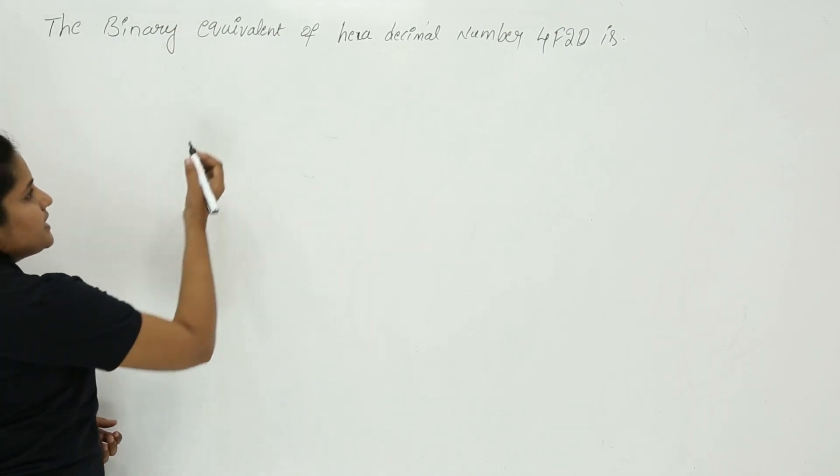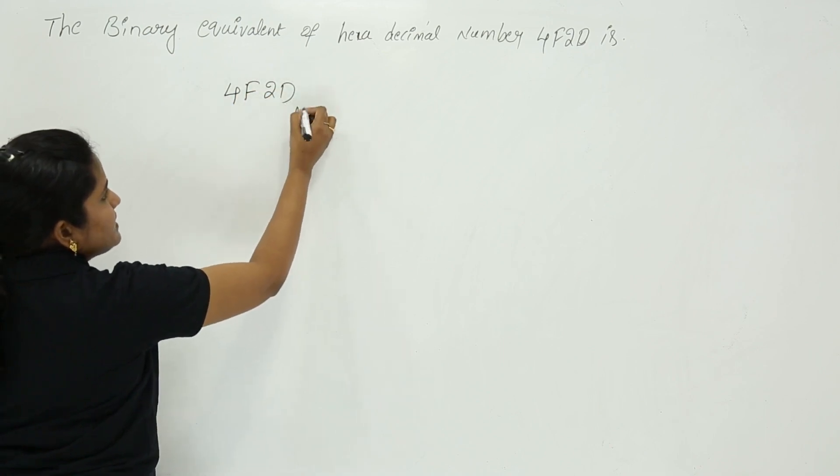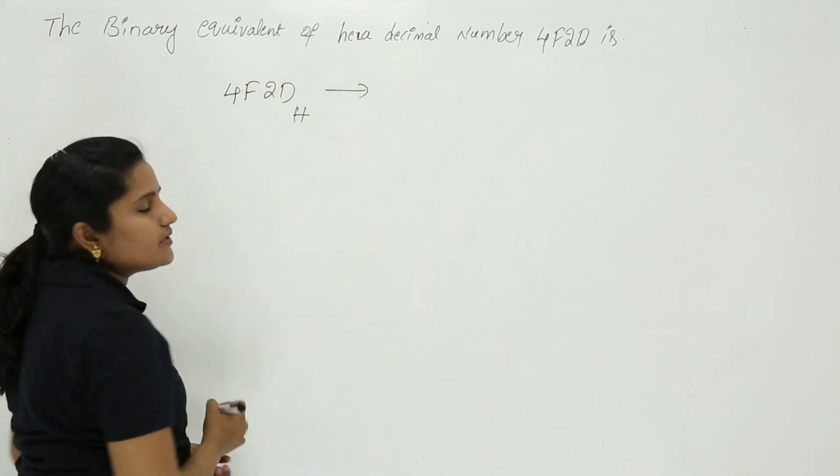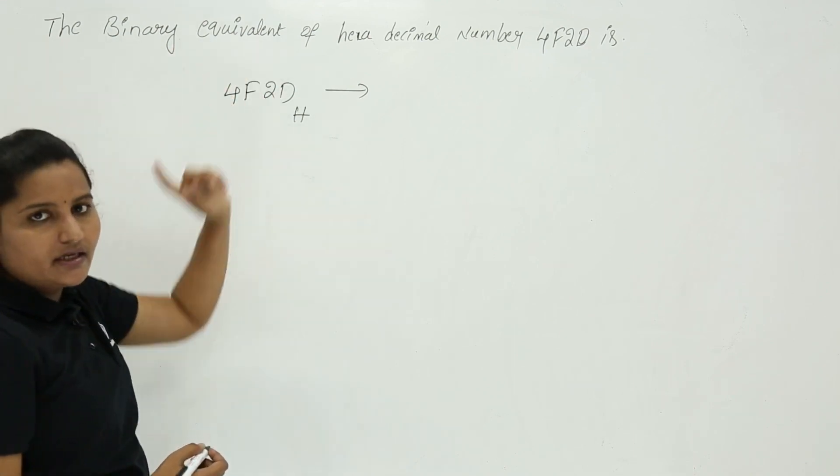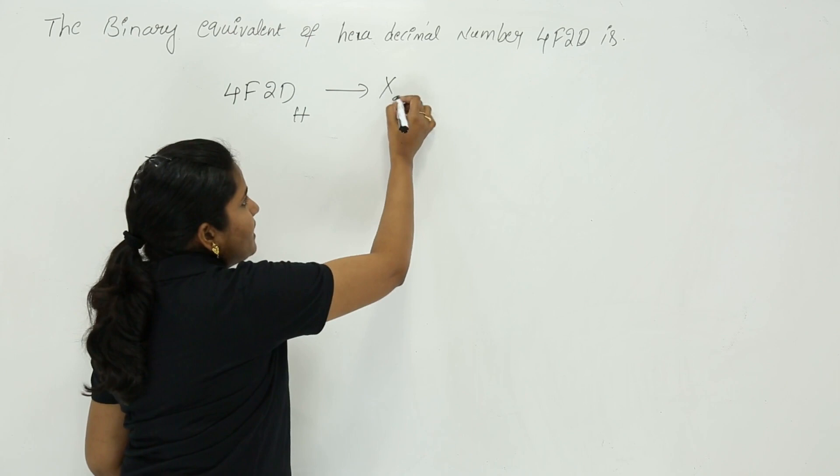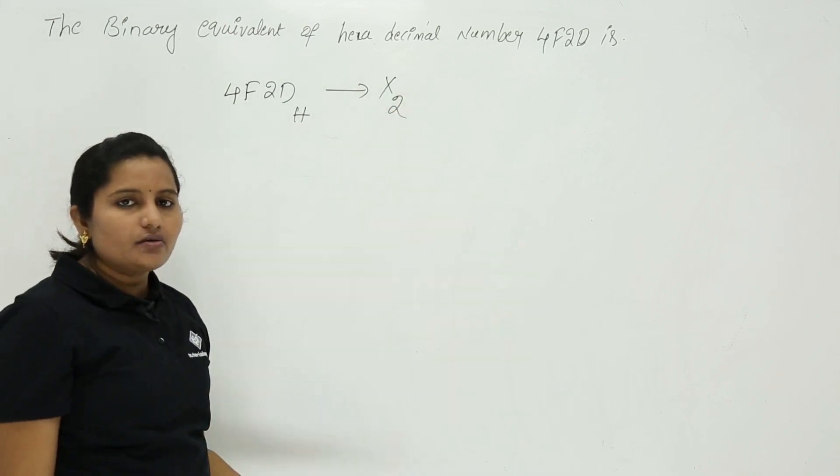The given hexadecimal number is 4F2D. We need to convert this hexadecimal to its equivalent binary. The binary equivalent means X in binary. We need to find out this X value.